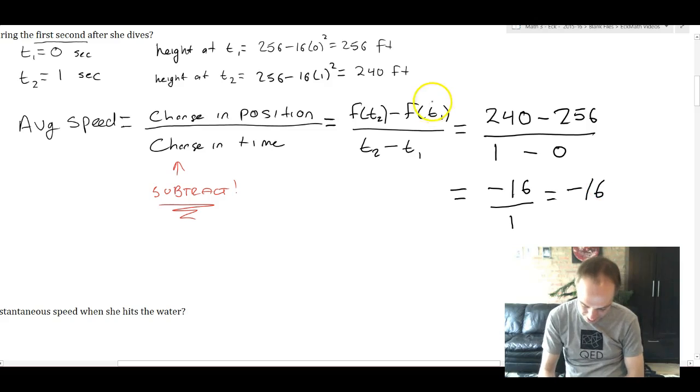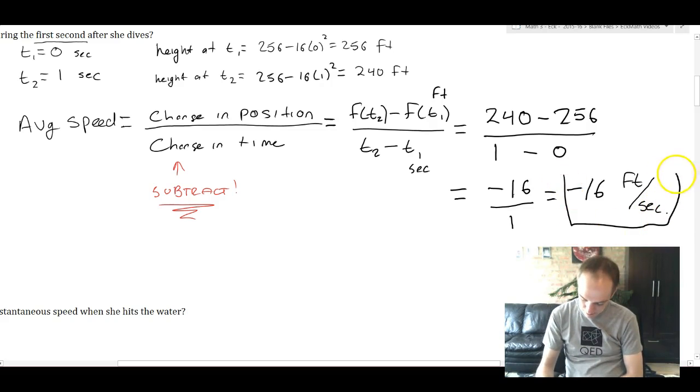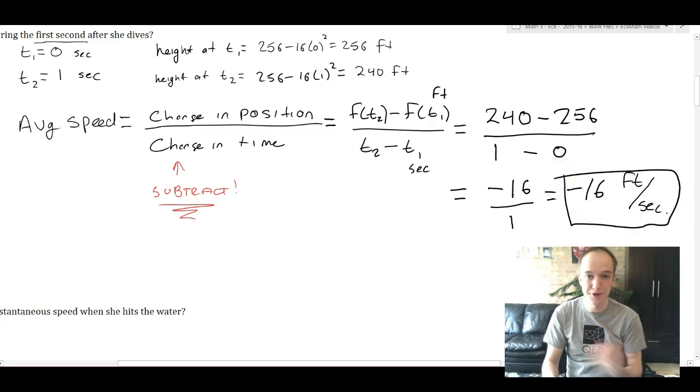Let's look at our units. This was feet because it was the height. This was time. So this is going to be feet per second as her average speed during the first second that she dives.